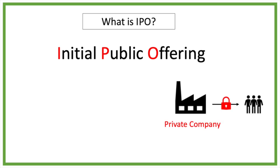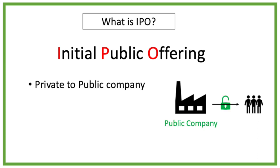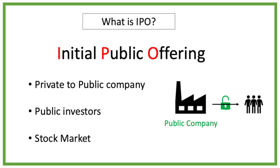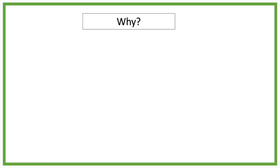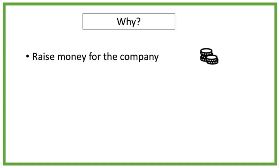When the company is private, it is locked for public investors. But on the IPO, the company becomes public and every investor can buy shares of the company. So IPO is when a private company is going public by issuing stocks to public investors on the stock market. A private company is becoming public if they want to raise new money for the company, so the company can expand more in the future.